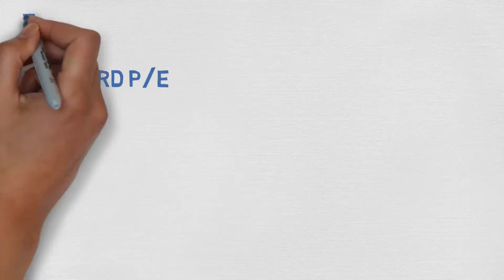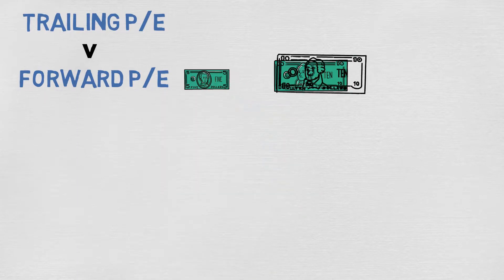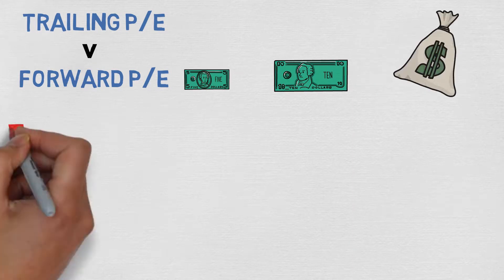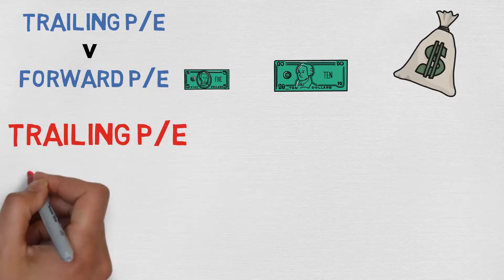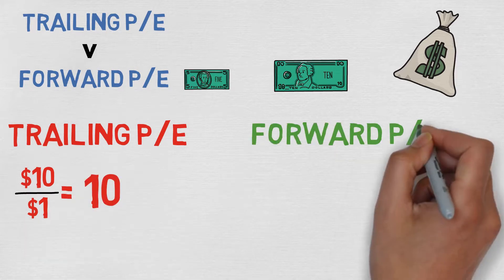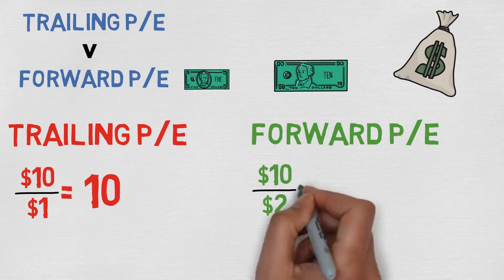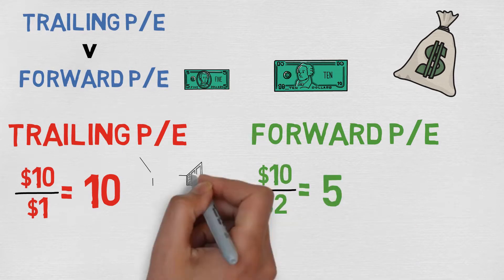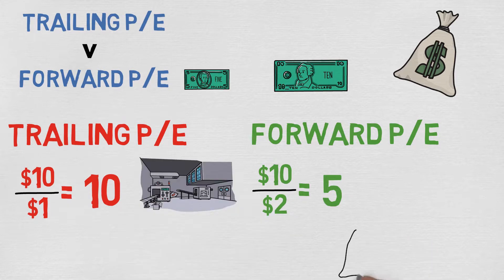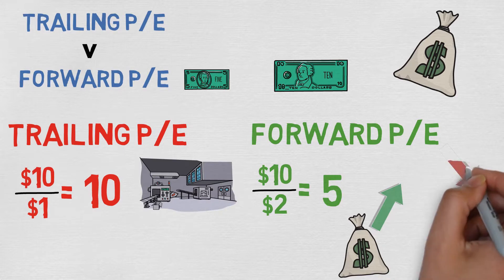That's one thing to consider with the trailing PE ratio. First of all, if the forward PE ratio is lower than the trailing PE ratio, it means that the earnings are expected to increase. For example, if the price is $10 and trailing earnings per share are $1, the trailing PE ratio is 10. However, if the estimated future earnings per share are $2 and the share price is still $10, the forward PE ratio is 5. As you can see, if the price remains the same and earnings rise, the PE ratio becomes lower.